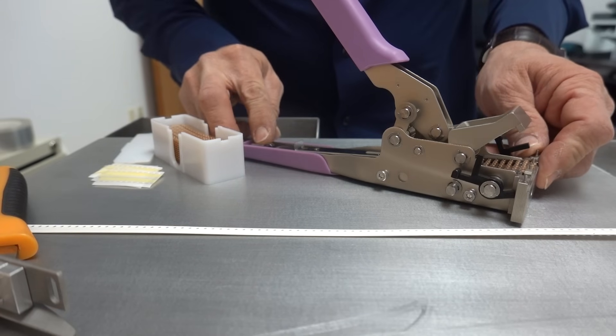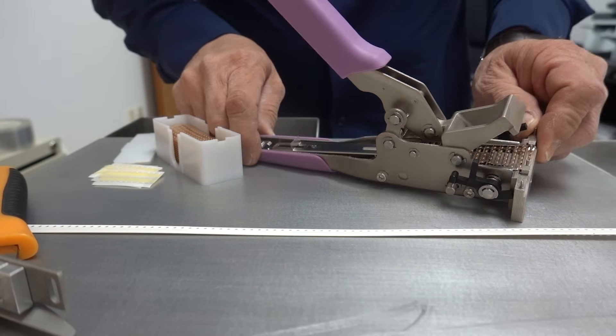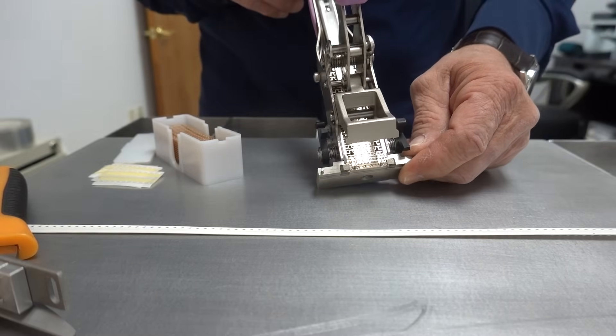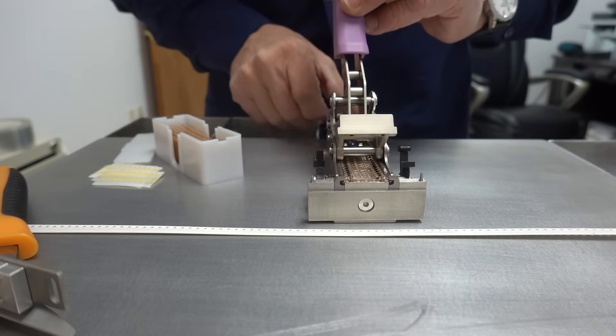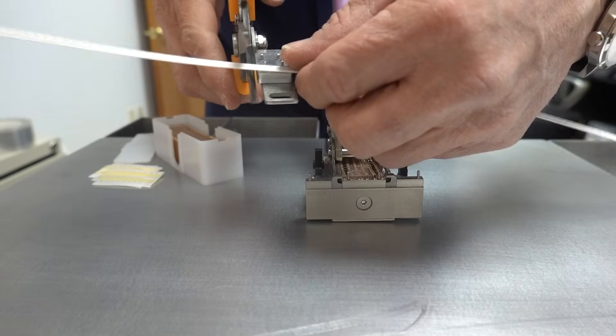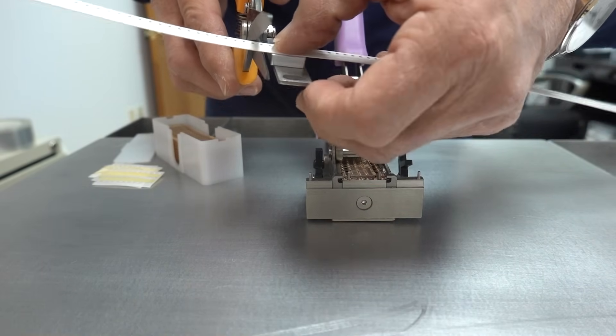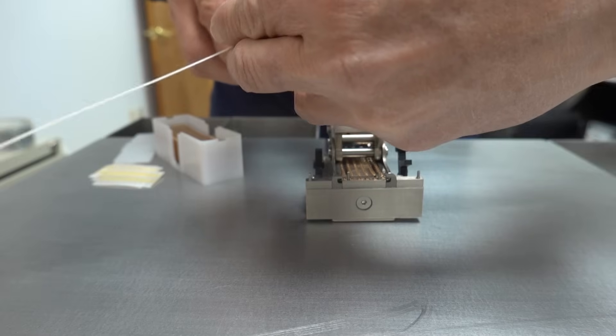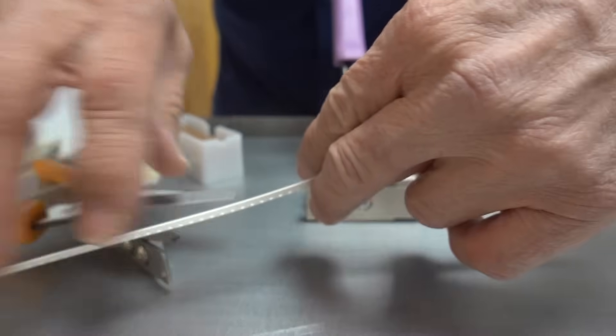You will then release the tensioner and so now you have the splice shim loaded inside the carrier tape. Now we will just put this on the alignment pins and we will cut the carrier tape to be spliced.